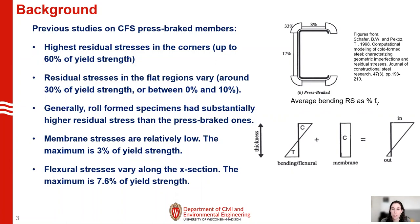Membrane residual stresses result from Poisson stretching due to the cold forming process and they are relatively low — the maximum is around 3% of yield strength. The flexural or bending residual stresses vary along the cross section and the maximum is around 7.6% of yield strength. The figure up here, from a previous study, shows the average bending residual stress as a percent of FY — about 33% in the corner and 8 and 17 on the flats. This diagram shows how bending flexural and membrane residual stresses combine to give the outer and inner surface residual stresses.